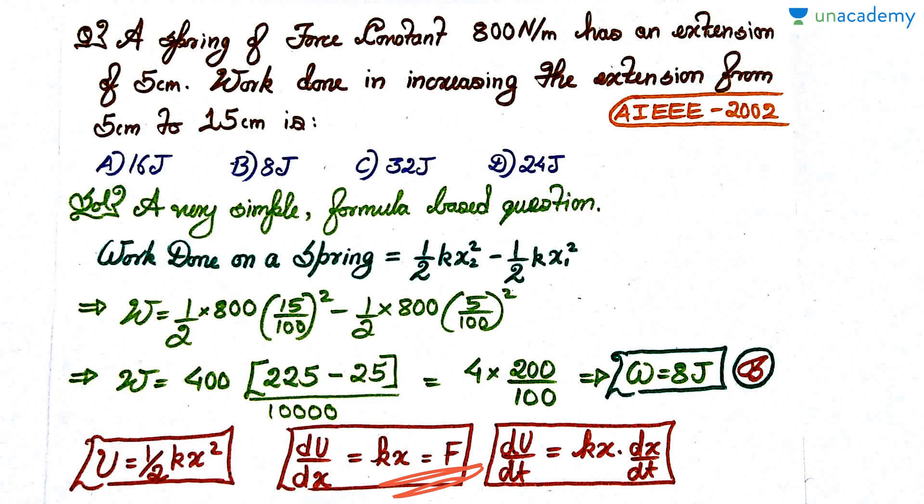You should also know that when you differentiate potential energy, what I get is kx, and kx is nothing but the force of the spring. If you differentiate U, that is if you differentiate the potential energy, then I get kx·dx/dt.